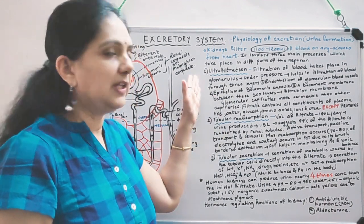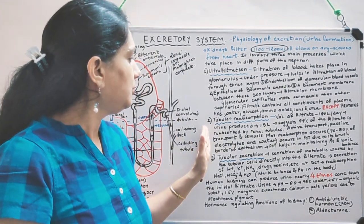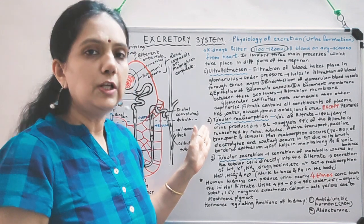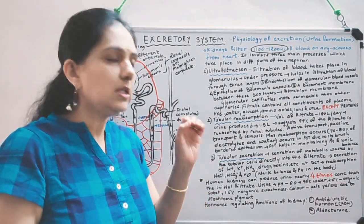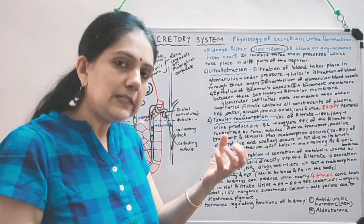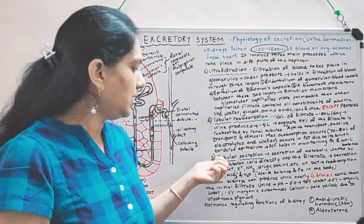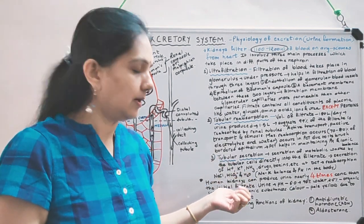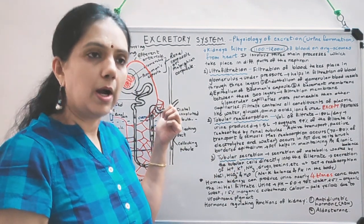In this step, there is filtration of blood. In tubular reabsorption, out of the total glomerular filtrate, only 1% is allowed to move ahead in the tubule and 99% is reabsorbed back. In tubular secretion, toxic and harmful substances are directly secreted into the DCT part.